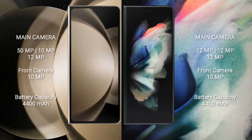Samsung Galaxy Z Fold 5 has a rear triple camera setup of 50MP plus 10MP plus 12MP, and a front camera of 10MP. Samsung Galaxy Z Fold 3 has a rear triple camera setup of 12MP plus 12MP plus 12MP, and a front camera of 10MP.